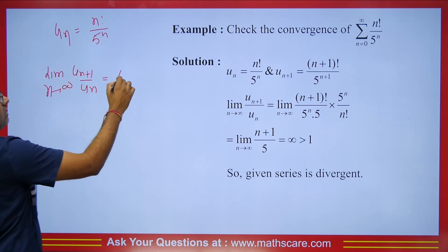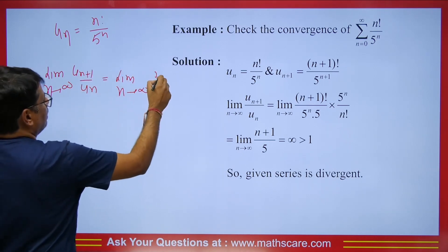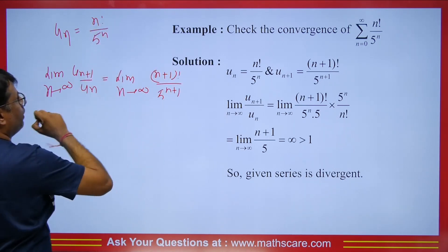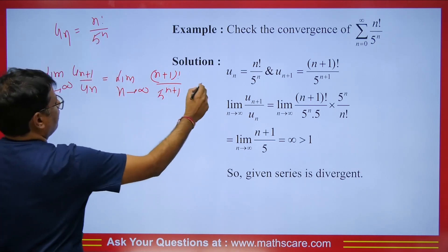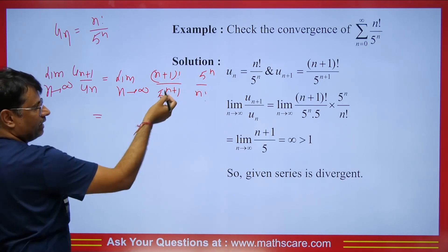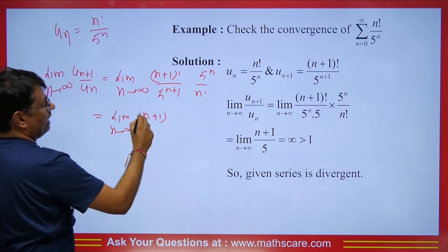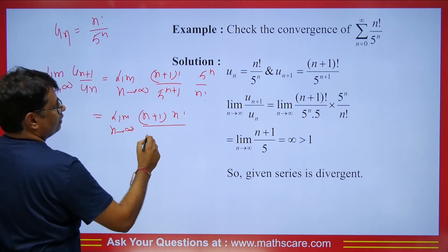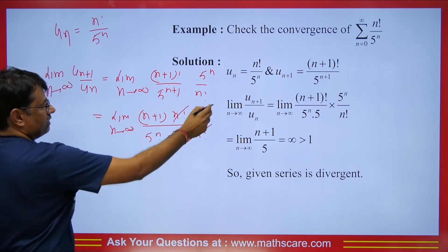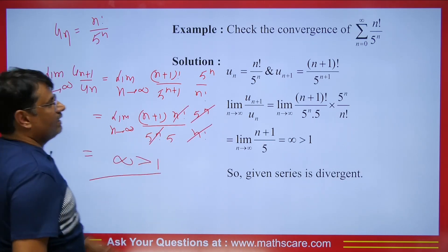Note that two or three tests can also be applied to any question — you need to see which is easiest to use. So u_{n+1} is (n+1)! upon 5^(n+1), divided by u_n which is n! upon 5^n. The 5^n terms cancel, and (n+1)! = (n+1) × n!, so n! cancels, leaving (n+1)/5. The result tends to infinity as n → ∞, which is greater than 1, so this series is divergent.